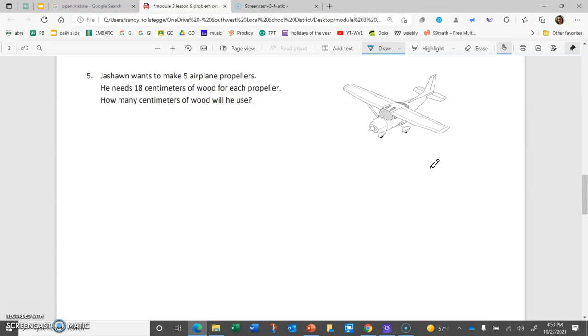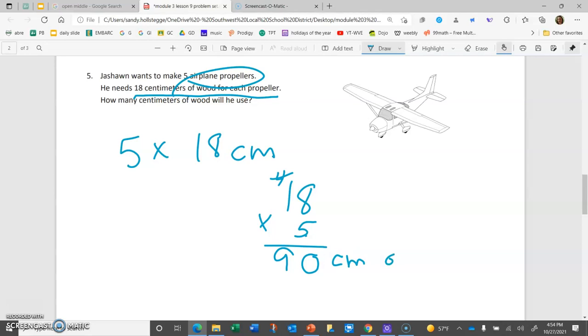Let's take a look at number 5. We have Joshan who wants to make 5 airplane propellers. He needs 18 centimeters of wood for each propeller. How many centimeters of wood will he use? Well, he needs 18 centimeters of wood, but he needs it 5 times. So, this is just another example of one of these two-digit by one-digit multiplication problems. We'll put our 18 up on top and the 5 below. I'll take my 5 times 8, which is 40. Here's my 0, and I'll carry that 4 to the tenths place. 5 times 1 of those tenths is 5 tenths. Add on 4 more tenths, and I'm up to 9 tenths or 90. So, I think that my answer is going to be 90 centimeters of wood.